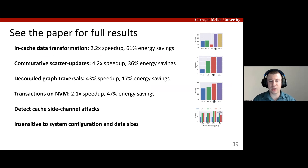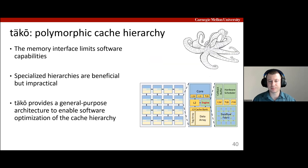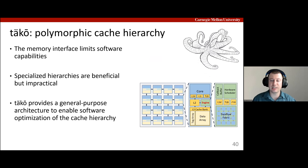I only showed a subset of the case studies evaluated in the paper, so please check the paper for more interesting examples using TACO as well as sensitivity studies. To wrap up, we've seen that the current memory interface severely limits application performance and functionality as data movement becomes increasingly expensive. A wide range of specialized hierarchies try to circumvent this issue by incorporating custom hardware, but this is not a practical solution. TACO addresses the issue head-on by opening the cache hierarchy to software, enabling new optimizations that are impossible on current systems. Thank you.